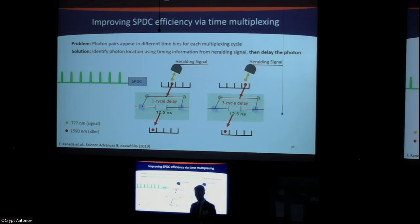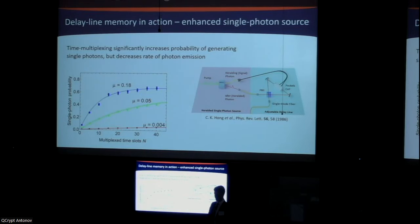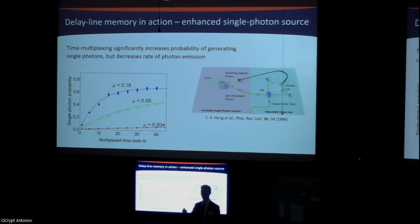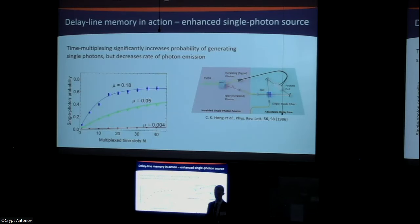You can see a plot of single-photon probability as a function of the number of time bins being multiplexed. We get pretty huge improvements by adding more time slots — at about 20 time slots we saturate at over 60% probability, up from about 7% without multiplexing. The downside is you significantly decrease the rate of emission, because the more time bins you dedicate to shuffling around, the fewer time bins you have for emitting photons at the end. But it is a good way to convert a non-deterministic source into a pseudo-deterministic source.